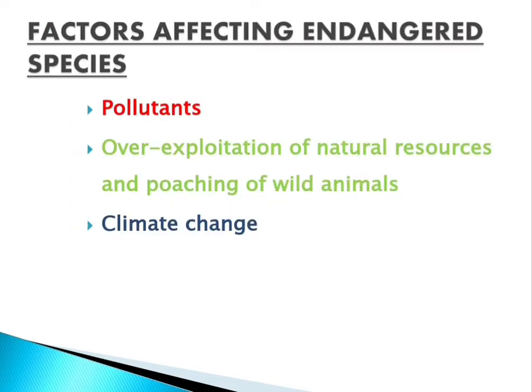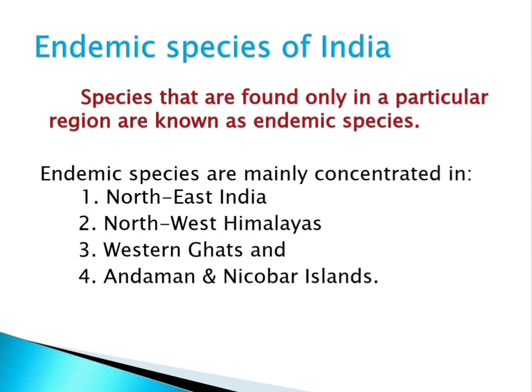Factors affecting endangered species include natural hazards and climate change as major causes. Pollutants — toxic substances and chemicals from human activity — have hazardous effects on species and push them toward endangerment. Over-exploitation of natural resources and poaching of wild animals through human interaction also impact wildlife. Different resources taken from wildlife ultimately affect the flora and fauna, pushing species toward endangerment.